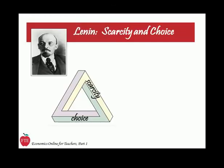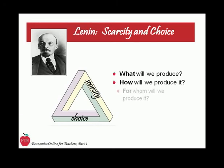Like the 1,000 years of Tsars, like Nicholas and like Kerensky before them, the Bolsheviks faced scarcity — a reality starkly apparent in an underdeveloped country ravaged by internal and external warfare. Lenin immediately and continually had to make choices about production and consumption in order to answer the three basic economic questions: what to produce, how to produce it, and for whom to produce it.